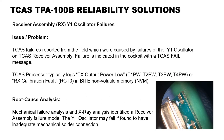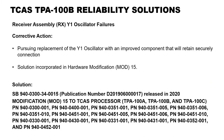During environmental stress, the oscillator may lose electrical connection with the circuit card and cause loss of oscillator frequency. Inadequate mechanical solder connection within the component was validated with mechanical failure analysis and X-ray analysis. As a corrective action, Honeywell is pursuing replacement of the Y1 oscillator with an improved component that will retain a secure connection with the receiver board when exposed to substantial vibrations and environmental stresses. The solution incorporated is hardware mod 15, implemented through Service Bulletin 940-0300-34-0015.